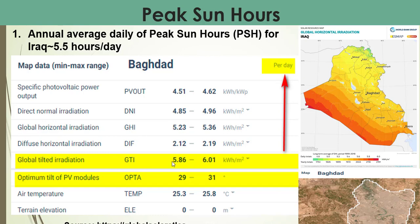The important point is that the global tilt radiation or insolation for our case is 5.5 hours per meter square. This value lies in the range of 5.68 to 6.01 kilowatt hours per meter square. As we said, if we divide this value by 1 kilowatt per meter square, the result will be the peak sun hours.